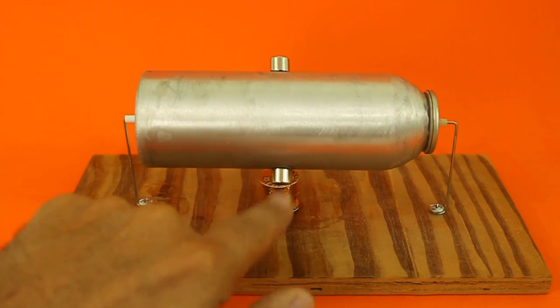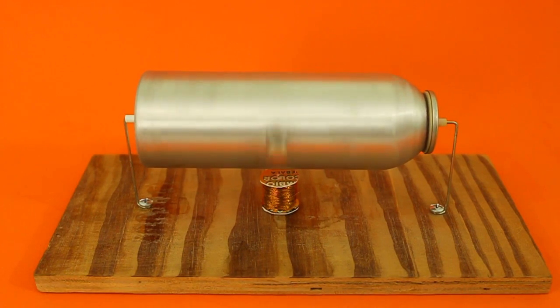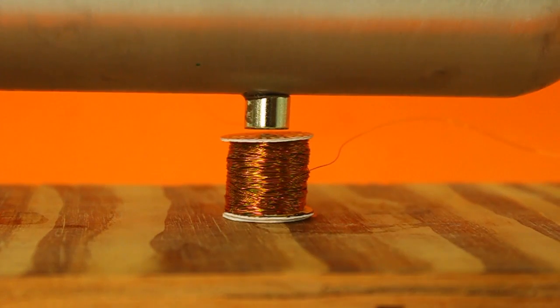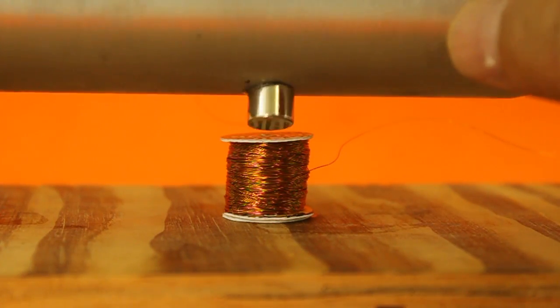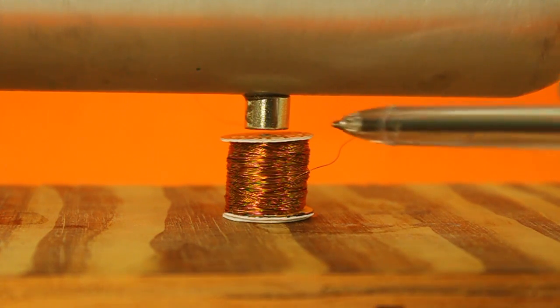You have the coil aligned with the magnets. The magnet must not collide with the coil, of course, but they must be as close as possible.